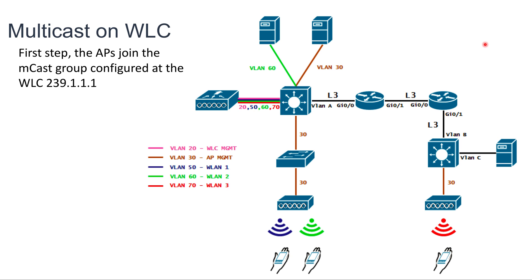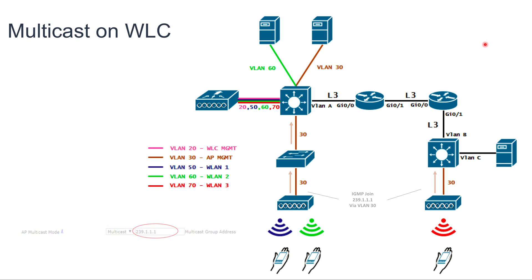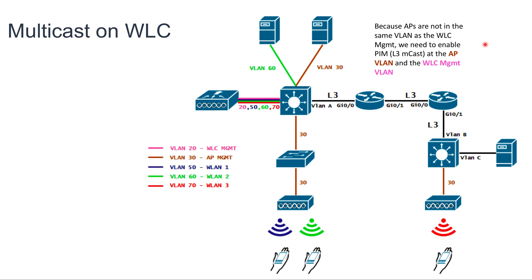The first step is that the access points will join the Multicast group by configuring the controller. This is assuming we're using Multicast-Multicast mode, which is the recommended one. We configure this IP address on the controller tab, and once we do that, the access points will send an IGMP join to that IP address via the management VLAN, so they can receive any encapsulated Multicast traffic from the controller. Because the access points are not on the same VLAN as the controller, we will need PIM to route Layer 3 Multicast traffic between the access point and the controller VLAN.